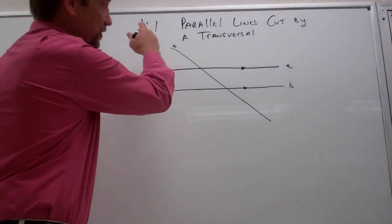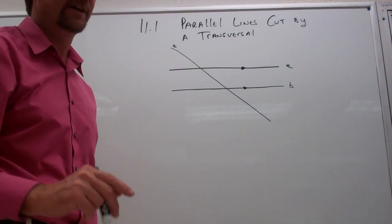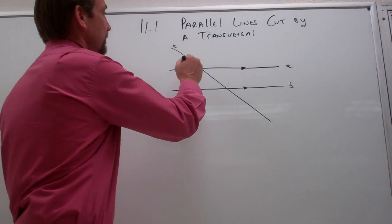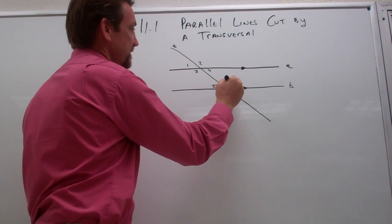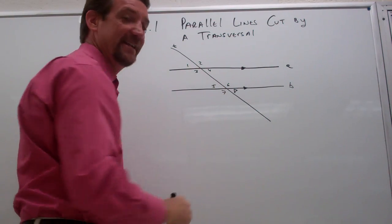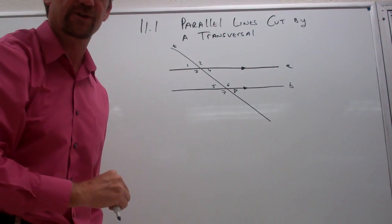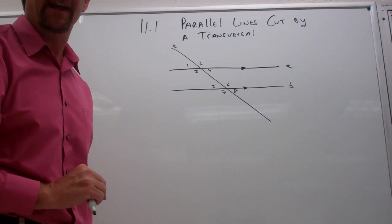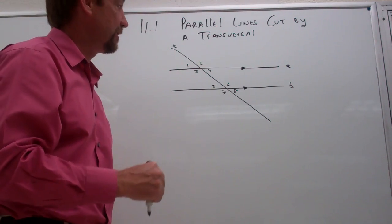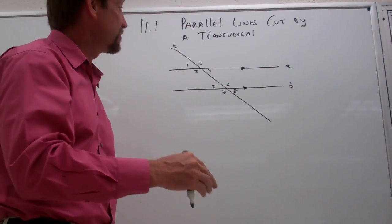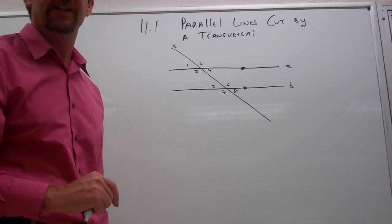So now our transversal has intersected our two parallel lines. Whenever that happens, there will always be exactly eight angles that get formed. When parallel lines get cut by a transversal, there will always be eight angles formed. And the neat thing is that these eight angles have some very common characteristics. Eventually, if I give you one of these angle measures, you'll be able to find the other seven. But first, let's talk about some of the names and properties of these angles.